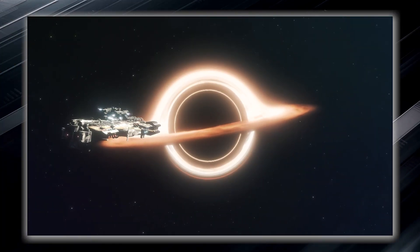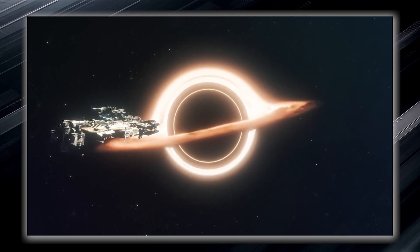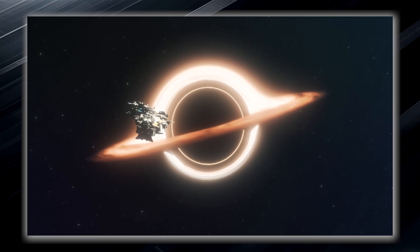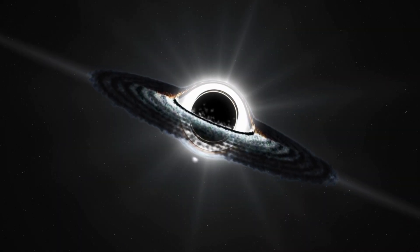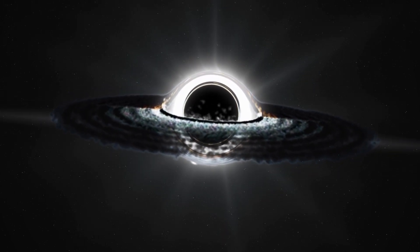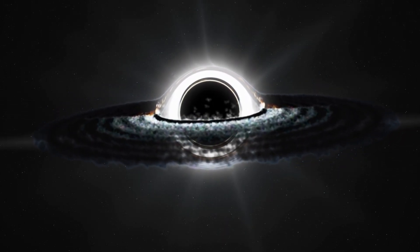Once something, such as an unfortunate spacecraft or even light, crosses its boundary, it can never escape the clutches of the black hole. The event horizon forms an invisible force field that holds everything within it, including light, which is normally considered the fastest entity in the universe.